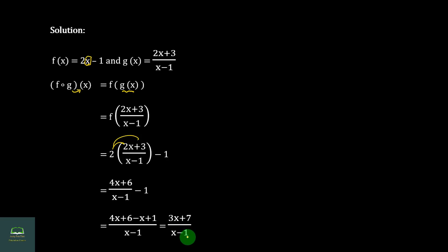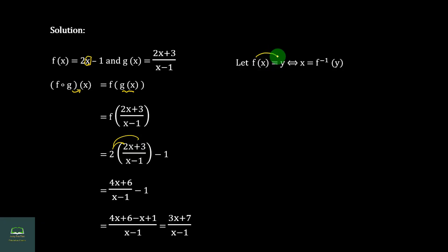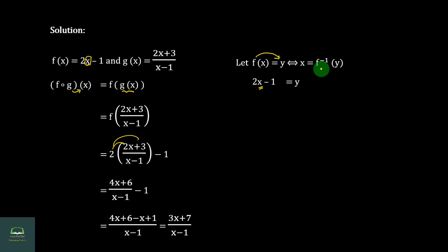Now we find the inverse functions. For f(x), let y equal f(x). To find f-inverse, swap x and y and solve for y. Working through: x minus 1, then y equals (x + 1) / 2, so f-inverse of x is (x + 1) / 2. Similarly for g-inverse, swap x and y in g(x) = (2x + 3)/(x minus 1) and solve to get g-inverse.